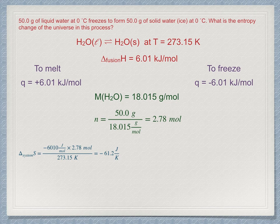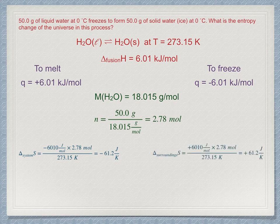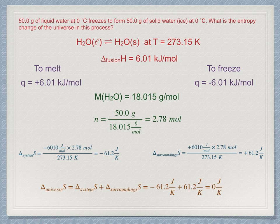By contrast, that heat that left the system had to enter the surroundings at that same temperature. So ΔS for surroundings is plus 61.2 joules per Kelvin. The sum of the two is the entropy change of the universe, and it is zero. This is so because the process occurs reversibly.